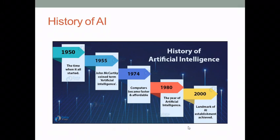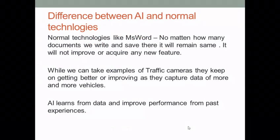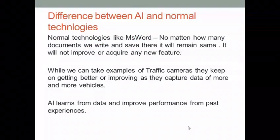In 1980, AI became so popular that the year was celebrated as the year of artificial intelligence. In 2000, a landmark of AI establishment was achieved, and this achievement was not easy. There came phases of various AI winters, which simply means those periods of time when there was no development, no research, and no work on AI.